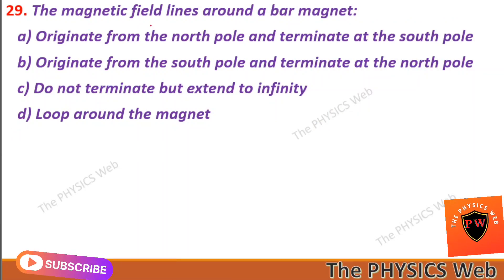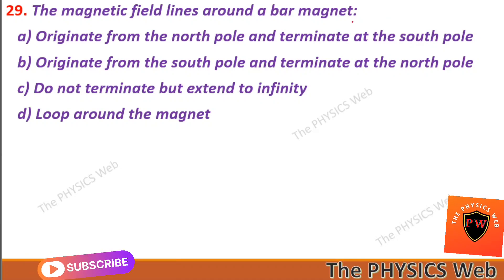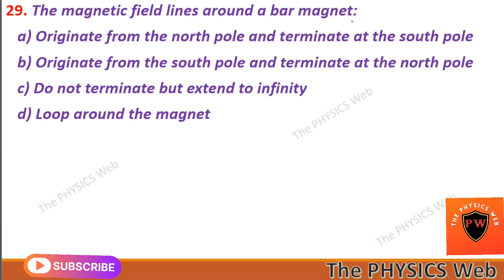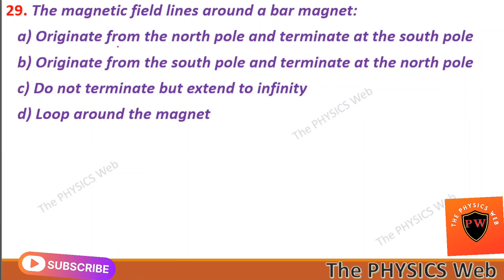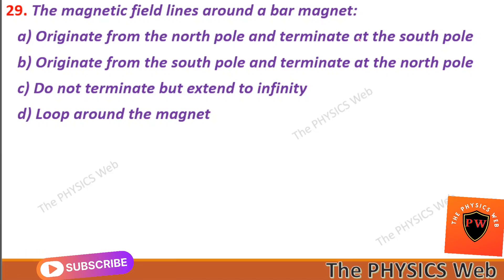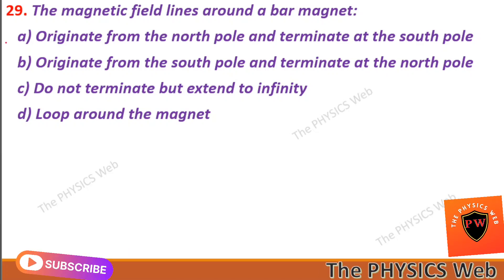Next, question twenty-nine: the magnetic field lines around a bar magnet originate from the north pole and terminate at the south pole. So A is your correct option.